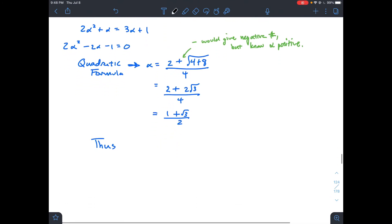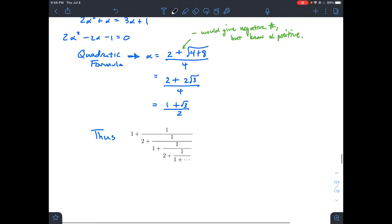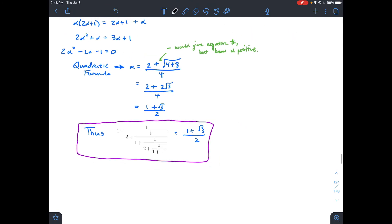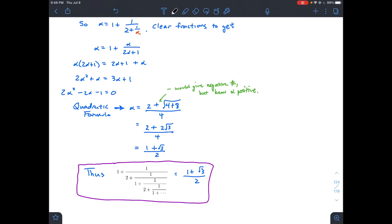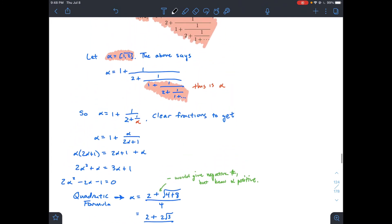If you simplify this, you should get 1 plus root 3 over 2. So what did we just show? We showed that this crazy infinite continued fraction is really the number 1 plus root 3 all over 2.